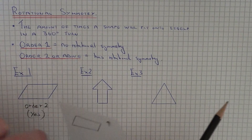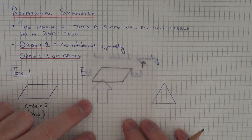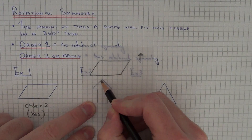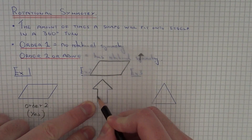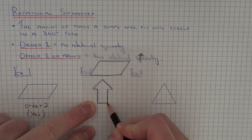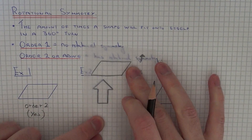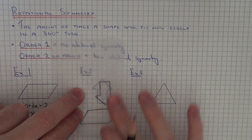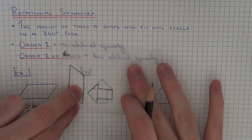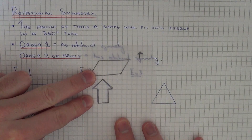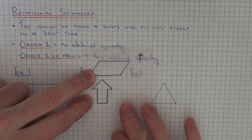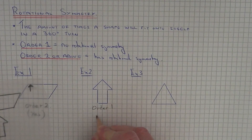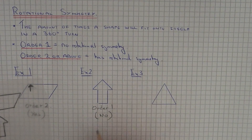Let's move on to example 2. Again, get your tracing paper, keep it upright, and trace your shape. You're going to see how many times it will fit onto itself in a full turn. It's only fitting onto itself once at the end, so the order of rotational symmetry on this one is order 1 — it doesn't have rotational symmetry.